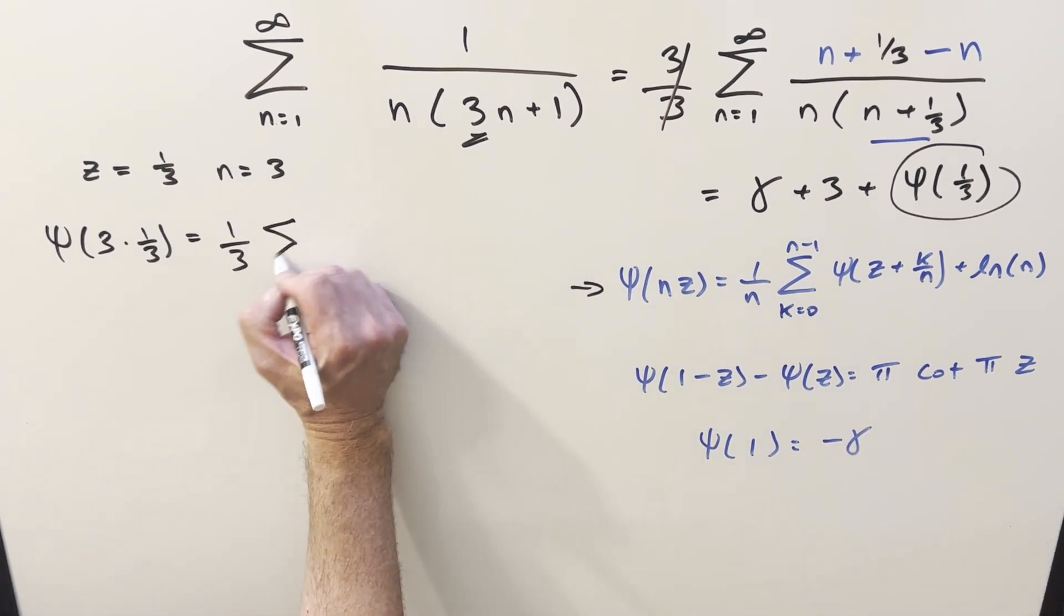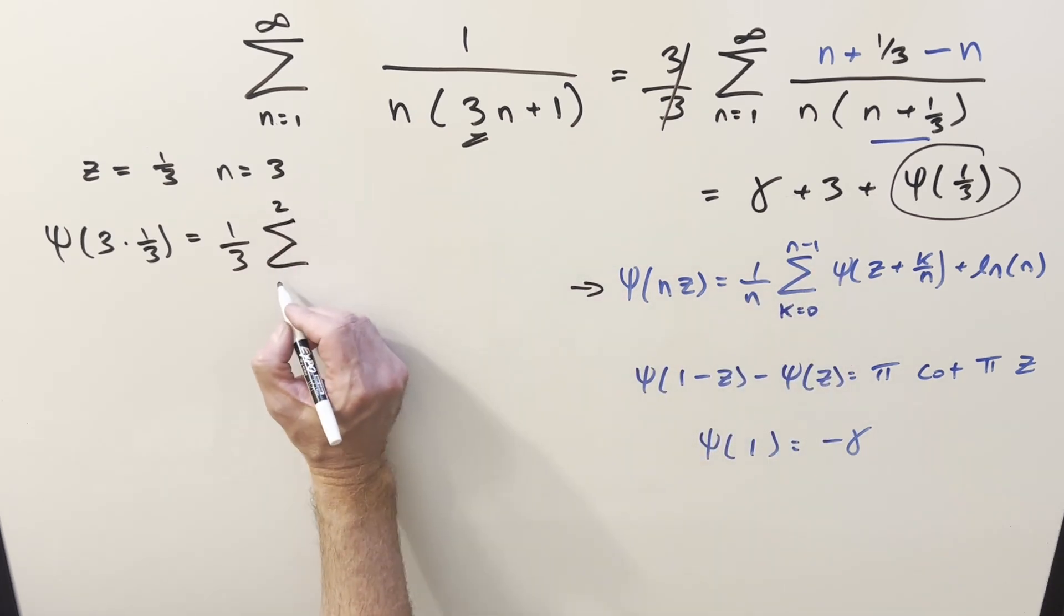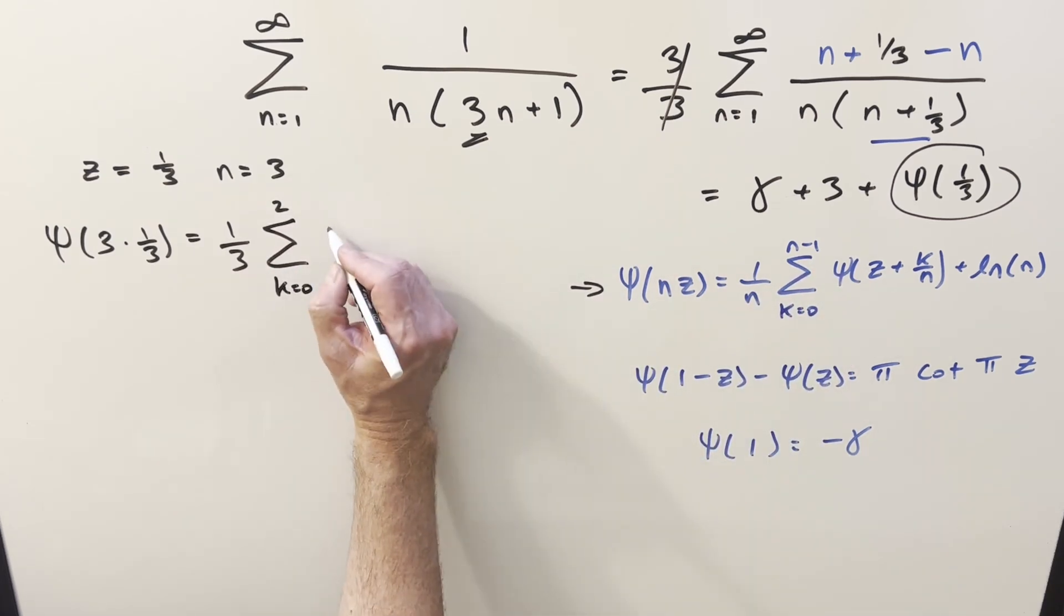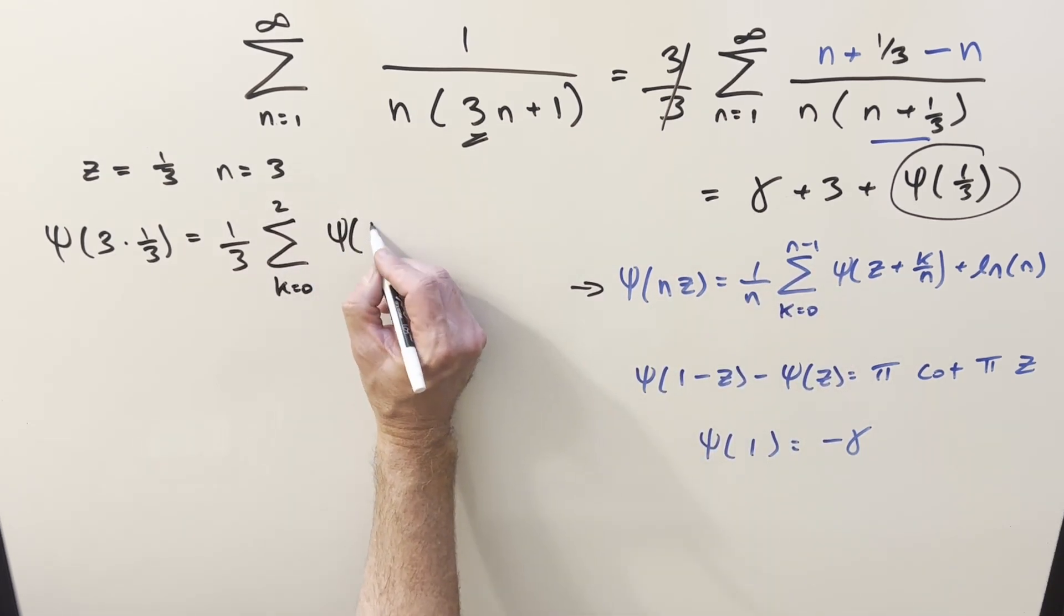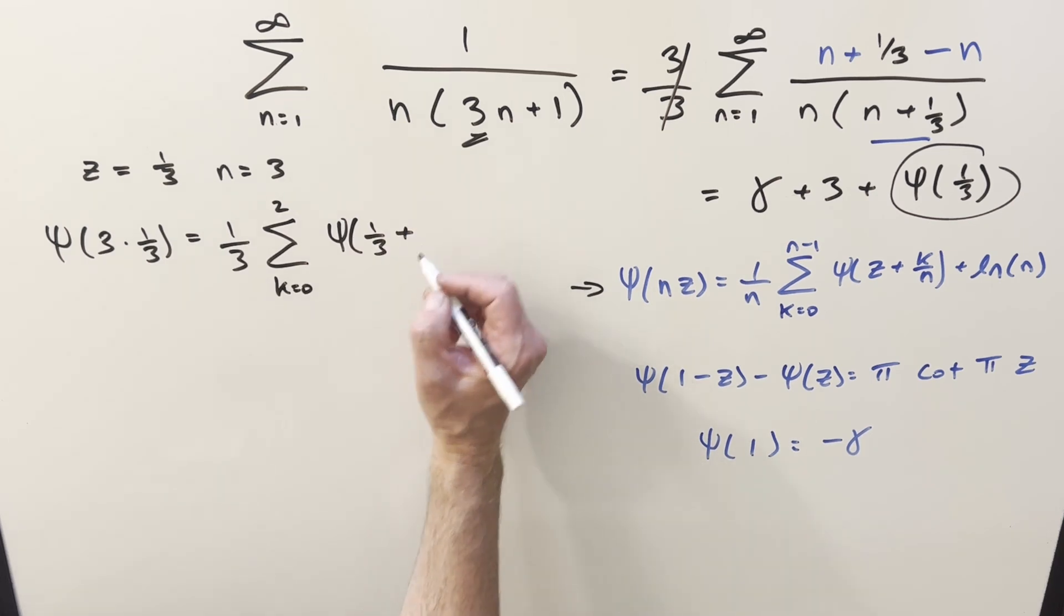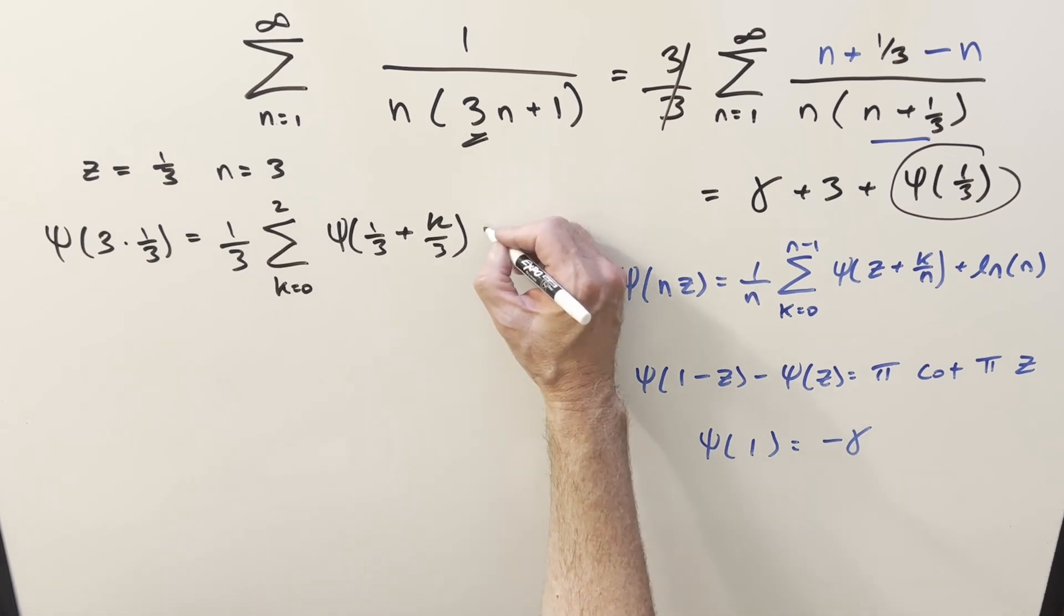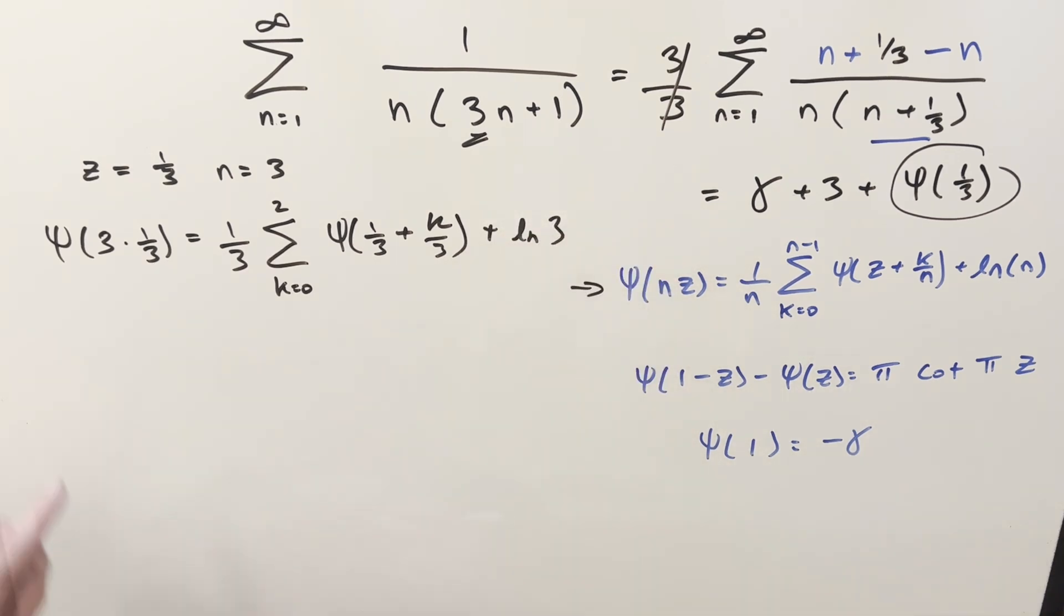Then on the left side of this equation, we end up with 3 times 1 third. But this is just digamma of 1, and we have this known value that digamma of 1 is going to be minus Euler-Mascheroni constant. So then on the right side of the equation, 1 over n is 1 third. And then we're going to have ln 3 here.